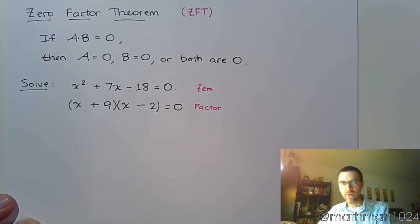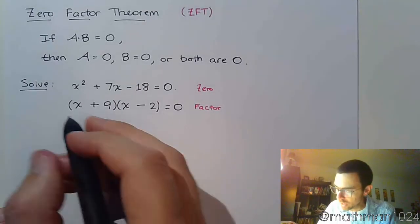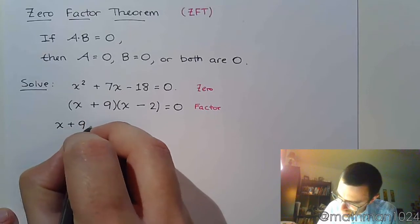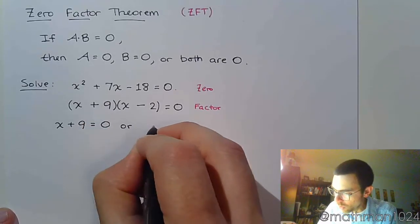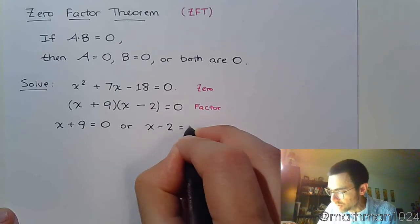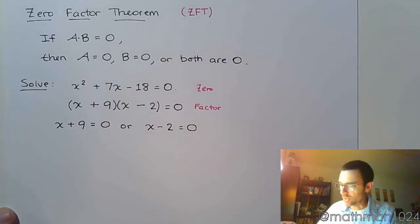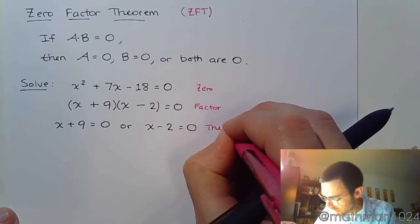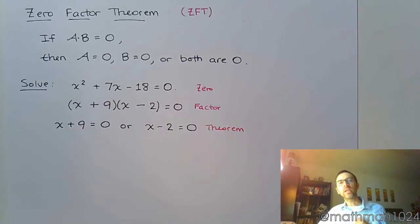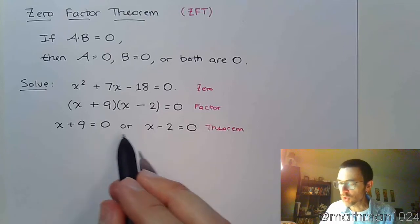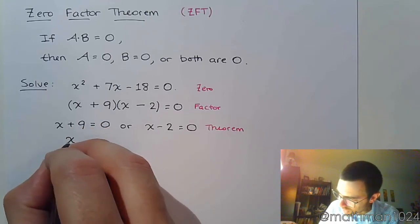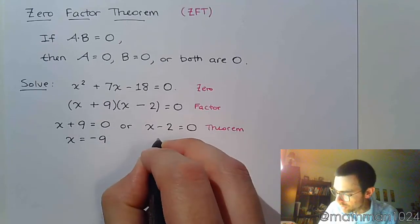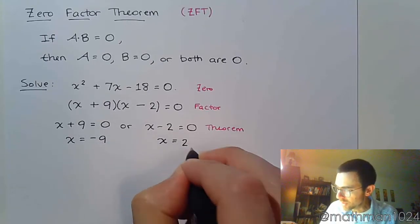The last part of the zero factor theorem says that if you have a product that equals zero, that means x + 9 = 0, or the other factor, x - 2 = 0. This is the application of that theorem. You set each factor equal to zero, and then you solve these smaller linear equations. We know how to solve linear equations. So, you take something that's quadratic, a little bit more complicated, and you break it down into two smaller linear equations. So, when you solve this, you get x = -9. And over here, x = 2.